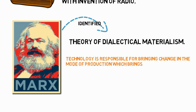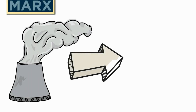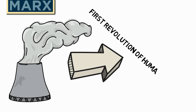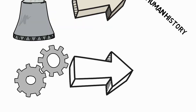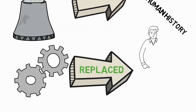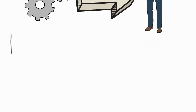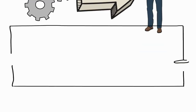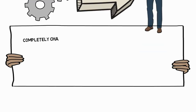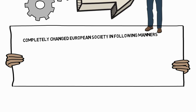The Industrial Revolution is the first revolution of human history, which was basically a technological revolution. The machine replaced man as a force of production, which completely changed European society. The first change was that a feudal, agrarian, and rural Europe changed into a democratic, industrial, and urban society.